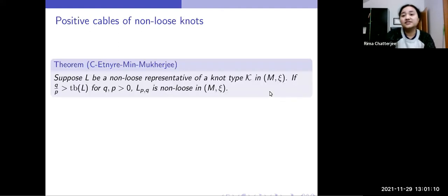So our first theorem is that if we have a non-loose representative in contact structure, and if the cabling slope is greater than the Thurston-Bennequin number for positive cables, then the cable will be non-loose.